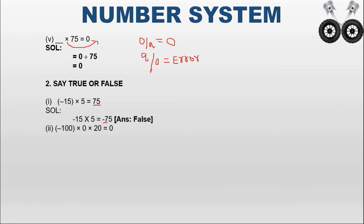The second statement: minus 100 into 0 into 20 equals 0. Multiplying the first two integers: minus 100 into 0. Any number multiplied by 0 gives 0. Then 0 into 20 equals 0. Any number multiplied by 0 equals 0. So the answer is 0, and the given condition is true.